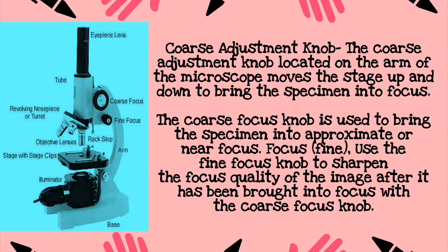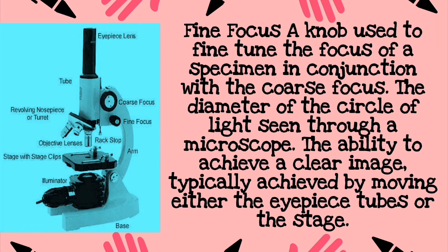Next is the coarse adjustment knob, located on the arm of the microscope. It moves the stage up and down to bring the specimen into focus. The coarse focus knob is used to bring the specimen into approximate or near focus. Use the fine focus knob to sharpen the focus quality of the image after using the coarse focus knob.